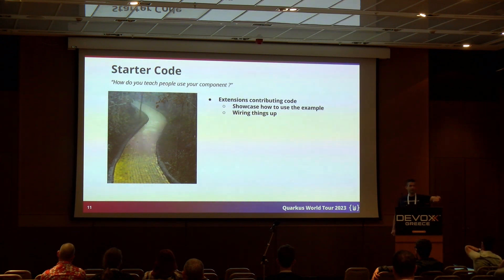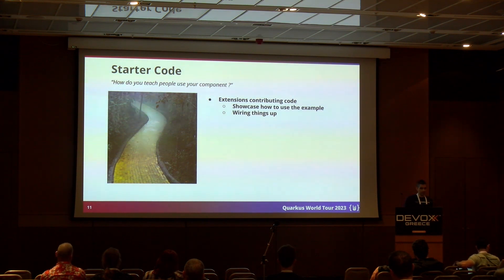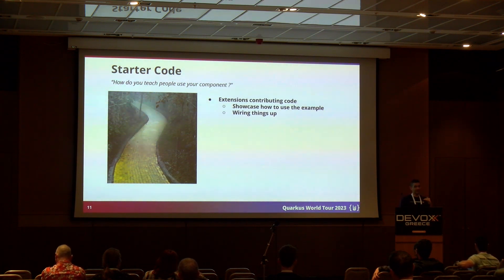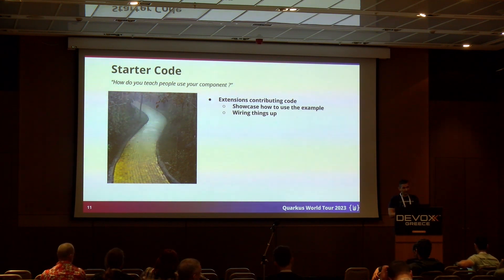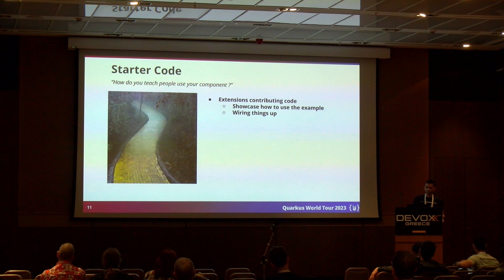Do you just hand them a jar and link to a document that describes how the library is used, which more often than not will be out of sync with the actual jar, ending up in a mess? Quarkus extensions have the notion of starter code — templates that are rendered and applied to your project the moment you add the extension. So it's an excellent way to accompany the extension with example code that demonstrates how the library or component is meant to be used. And it's not just code — it can be wiring code too.